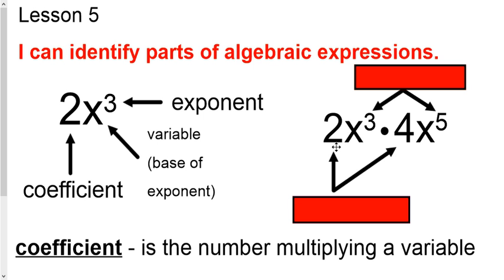So if I say coefficient over here, you would say the coefficients are 2 and 4. So these are our coefficients. Both of them are in front of the variable.